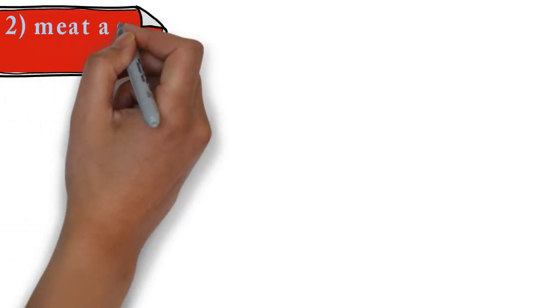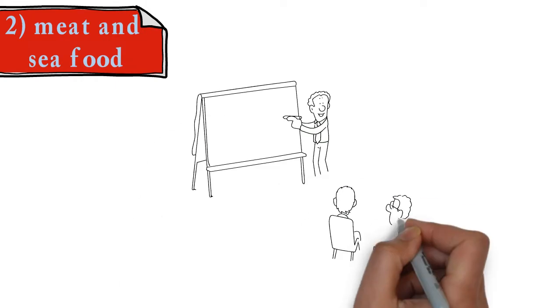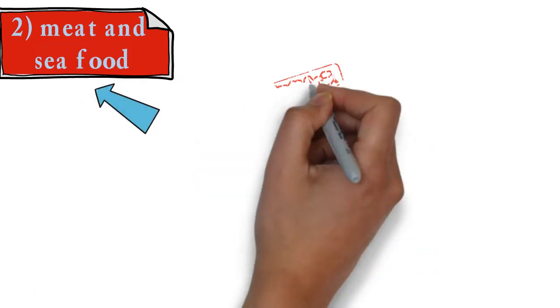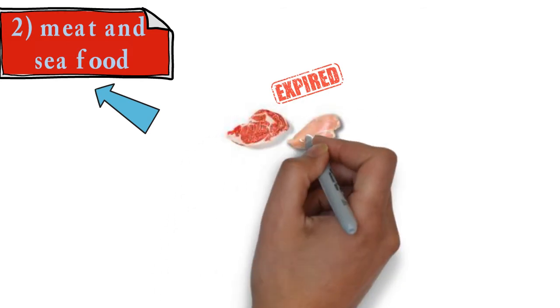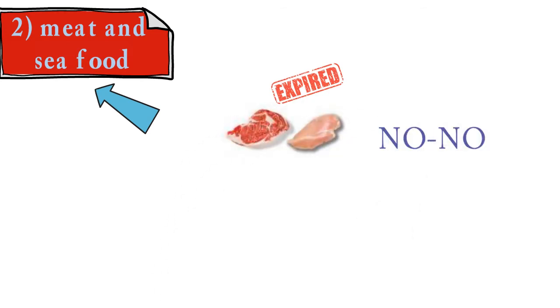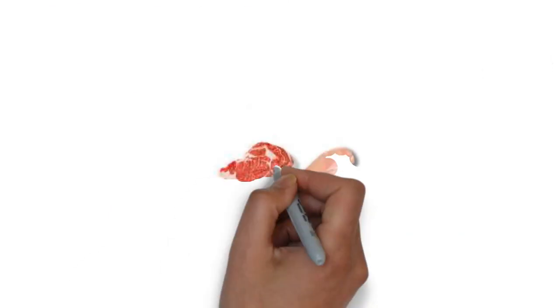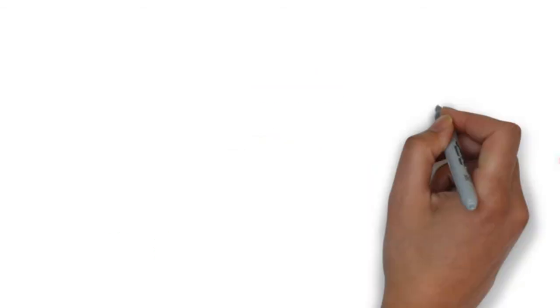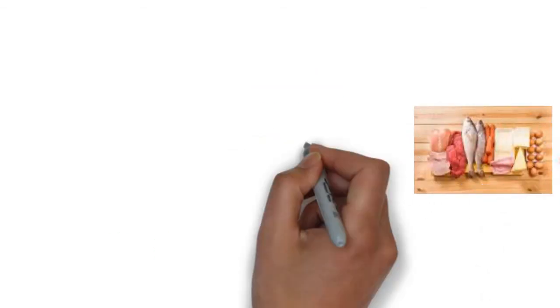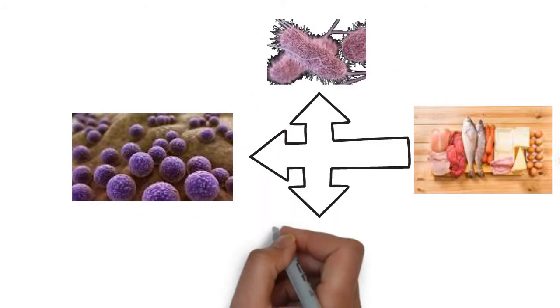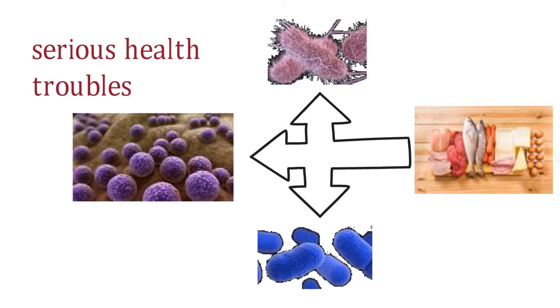Number 2: Another category of food where you need to exercise similar precautions is meat and seafood. Expired white and red meat are a strict no-no unless you want to give an invitation to food poisoning. Eating spoiled meat can cause abdominal pain, nausea, and vomiting. Animal-based products can get contaminated with Salmonella, Staphylococcus, or Listeria, and cause serious health troubles if they are consumed beyond the expiry date.